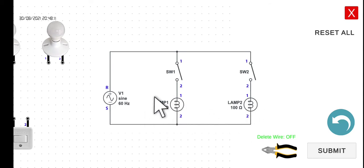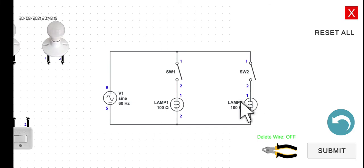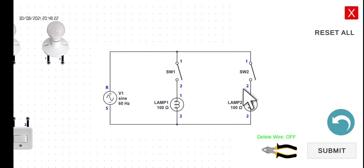In the second scenario, if switch one is on and then switch two is on as well, both lamp one and lamp two will be turned on because the current will now be able to flow through this line and also through this line. So let's wire the circuit and then simulate it later on.